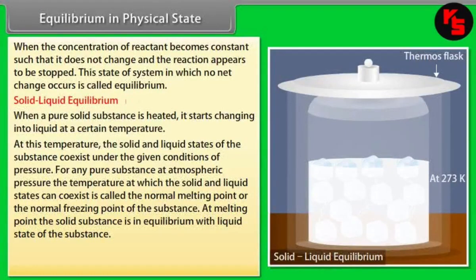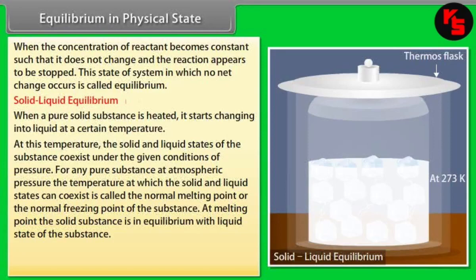At melting point, the solid substance is in equilibrium with the liquid state of the substance. Consider ice and water at 273 Kelvin — the melting point of ice — taken in a perfectly insulated thermos flask. The temperature as well as the masses of ice and water remains constant. This represents a dynamic equilibrium between ice and water. The number of molecules going from ice into water equals the number going from water into ice. Thus, at equilibrium, rate of melting equals rate of freezing.